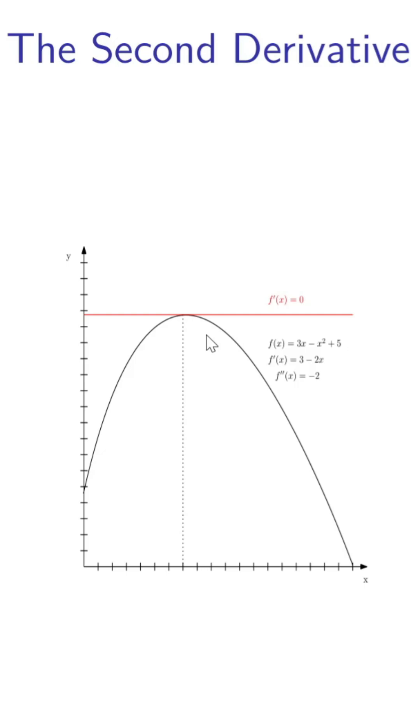We identify the extreme point by setting the first derivative equal to zero. So then we are here. Now, why do we know that this is a maximum if the second derivative is negative?